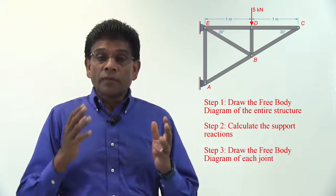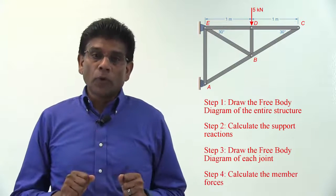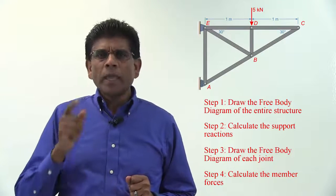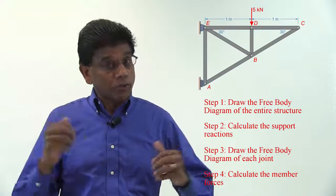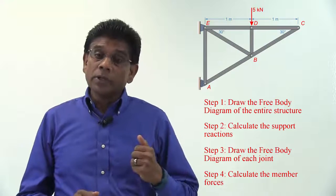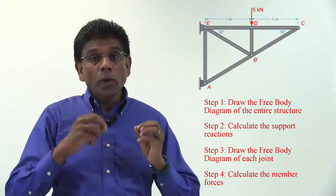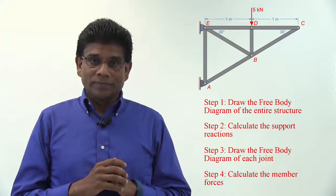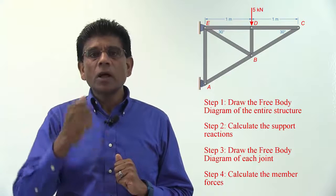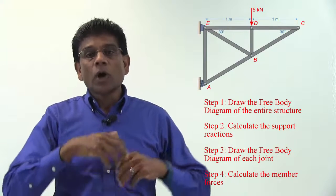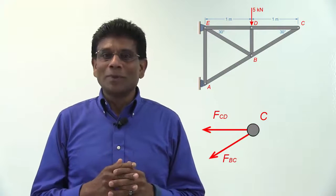We will then draw the free body diagram of each joint and calculate the member forces. Some of you may even start with the joint instead of drawing the free body diagram of the entire structure. For example, joint C in this case, where there are only two unknown forces. I encourage you to pause this video now and solve this problem yourself for all member forces using method of joints. It should not take too long to solve this problem.